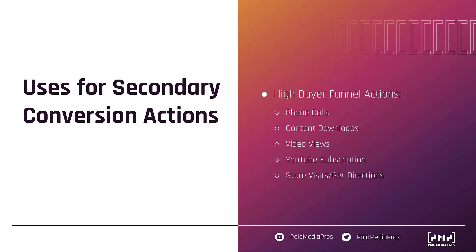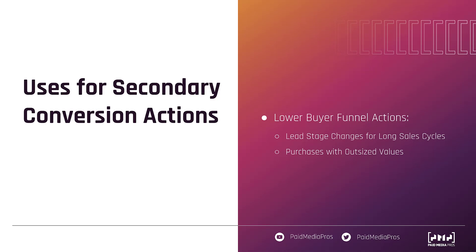All of these actions are steps that are higher up the buyer funnel than a typical conversion action, but they can still help you understand what areas of your account are driving higher user engagement with your brand and help you make better-informed decisions, even if they're not being used in the conversions column or for automated bidding. The second group of actions is basically the flip side of this and is typically only relevant for lead generation accounts. If somebody makes a purchase from you on an e-commerce site, you're probably going to want to count every single one of those as a primary conversion action.